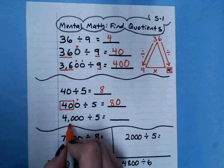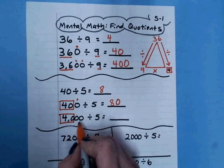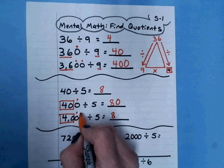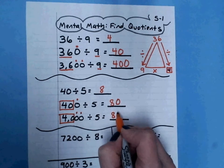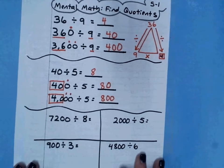And here's the last one in this pattern, 4,000 divided by 5. Again, my basic fact is 40 divided by 5, which is 8. And I have to add on these two 0s. So 4,000 divided by 5 equals 800.